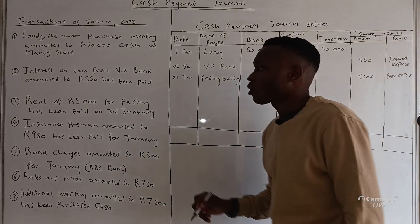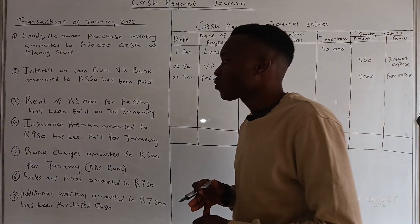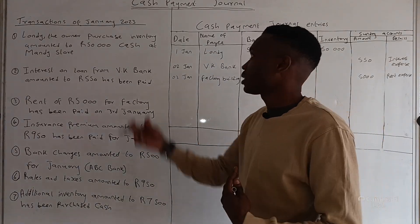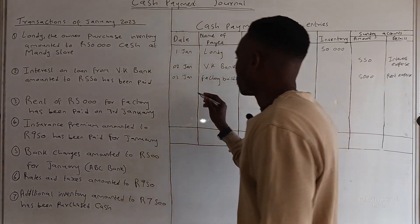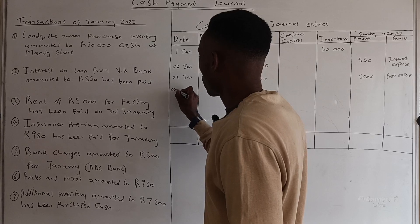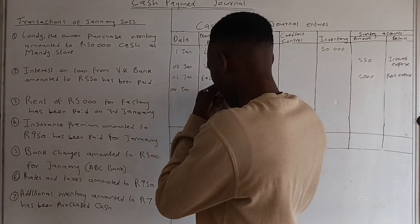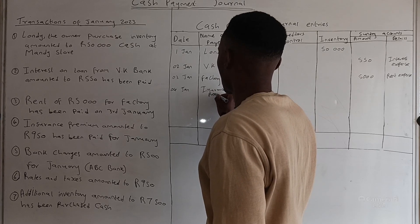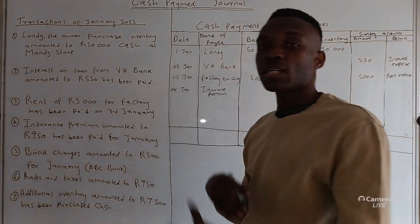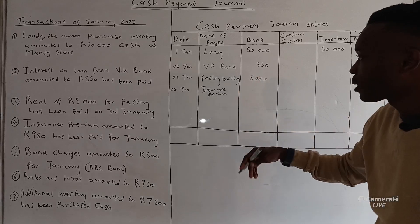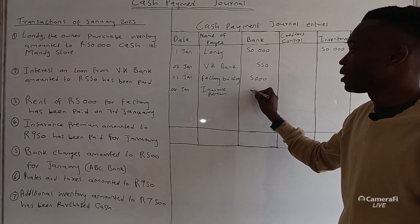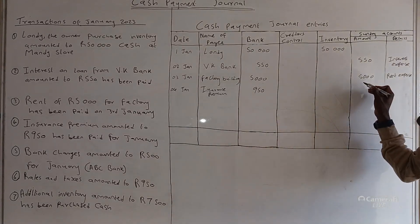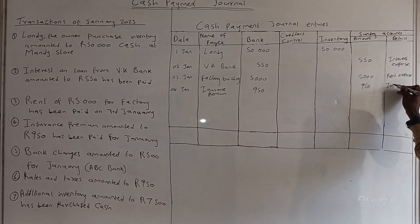Transaction four: insurance premium amounting to 950 has been paid for January. We paid insurance, so this is a cash payment. The date is 4 January and the name of payee is insurance premium — if we have the name of the company we can also mention it. The amount is 950 and it goes to the sundry account where we write insurance expense.